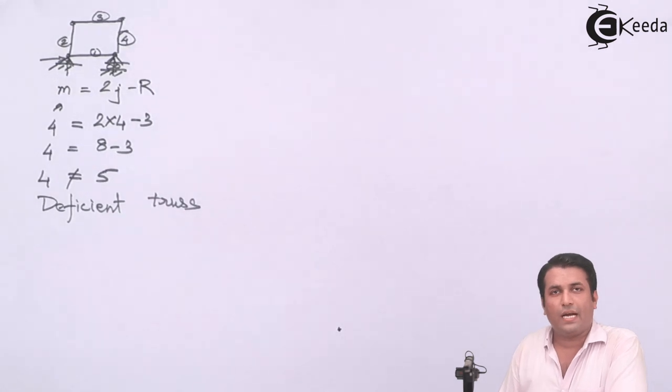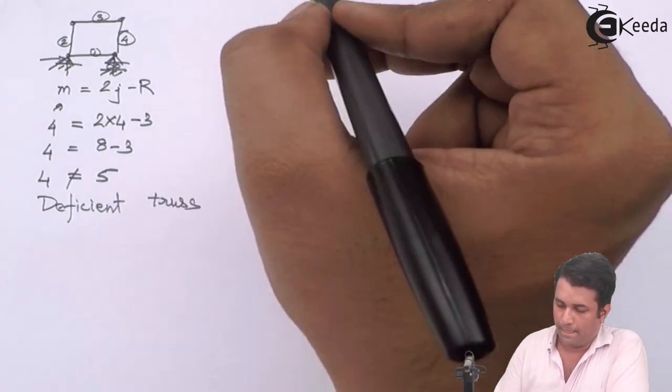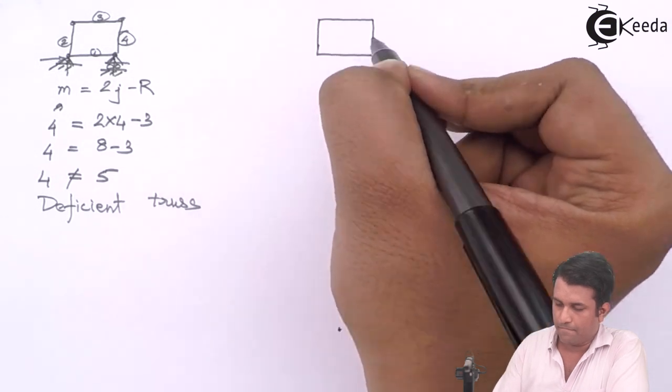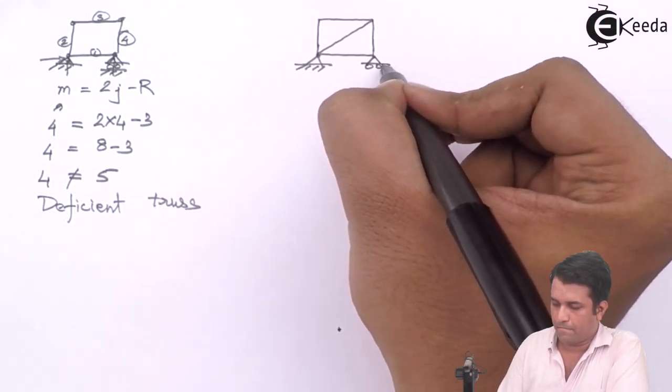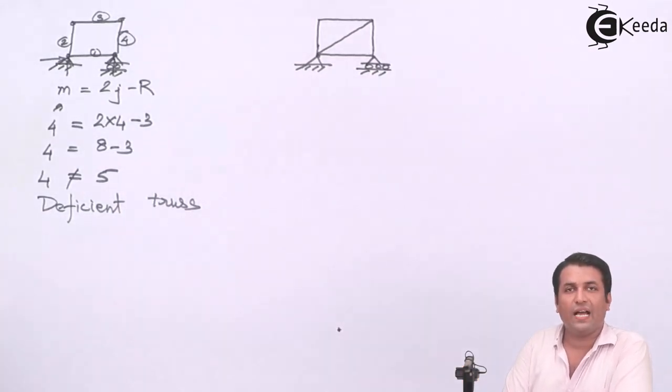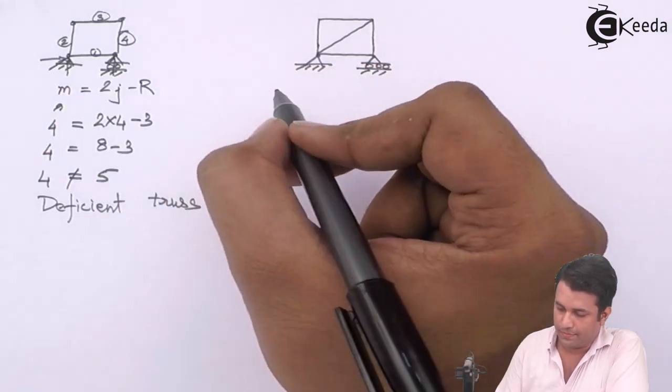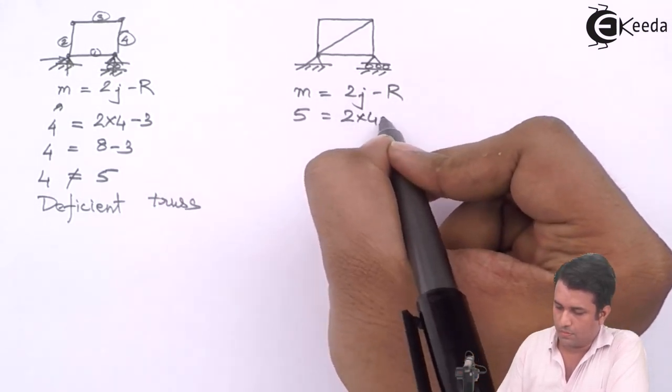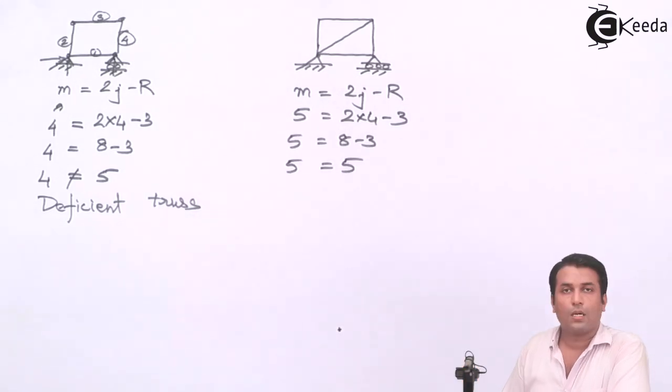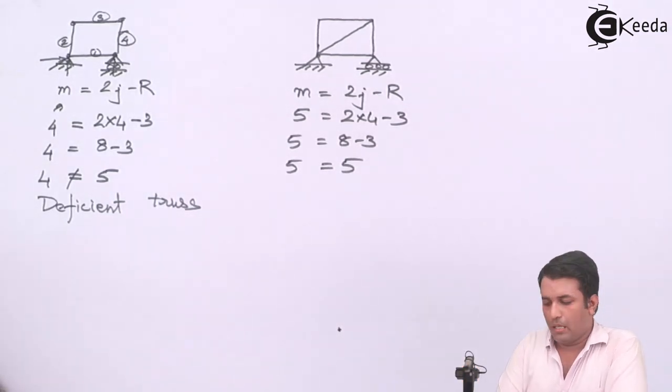Suppose it happens that if I want to add one member to this truss, there is a possibility that it will become a stable truss. In this example, you can see that I have made the square truss but with one more member in between. So my number of members becomes 5. I have the same number of joints, that is 4, and the number of reactions is same, 3. This becomes a stable truss because my left hand side and right hand side are same.